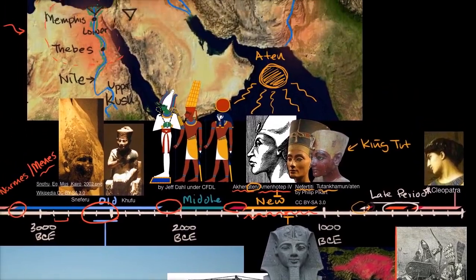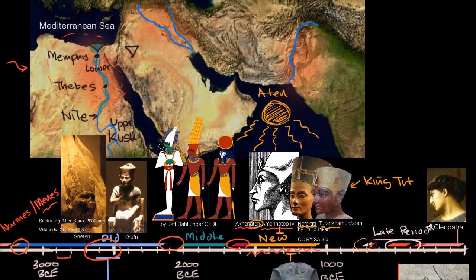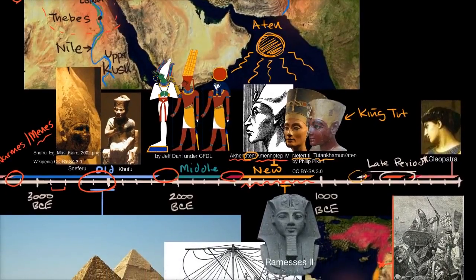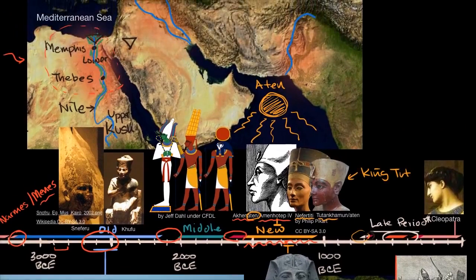As you can see, ancient Egypt covers an enormous time period and is one of the most significant civilizations in all of history. One of the most famous poems about rulers — Ozymandias — was named after Ramses II. Egypt had great cities of the ancient world: Thebes, the capital during parts of the New Kingdom and Middle Kingdom, and Memphis, said to have been founded by Menes and the capital of the Old Kingdom.